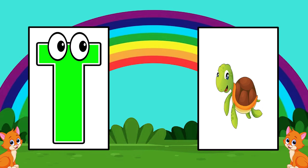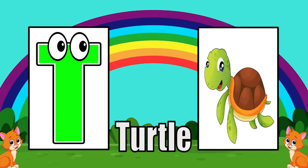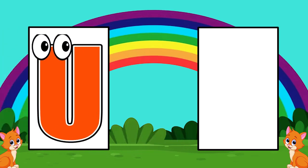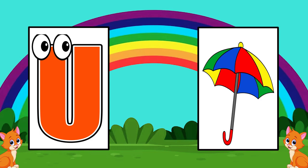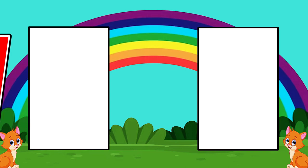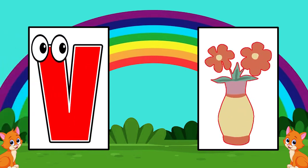T is for turtle. U. U is for umbrella. V. V is for waves.